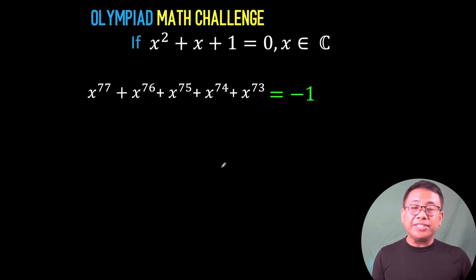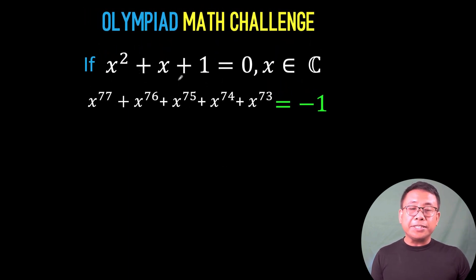So, going back to our math challenge, if x² + x + 1 = 0 and x is an element of the set of complex numbers, then x^77 + x^76 + x^75 + x^74 + x^73 is equal to -1. And this problem is now solved.